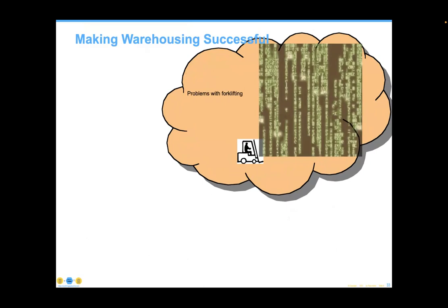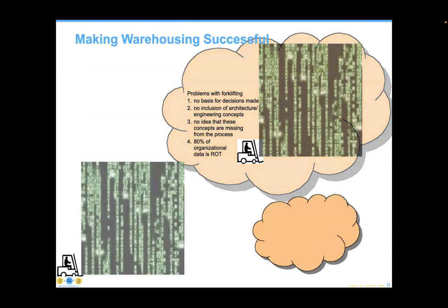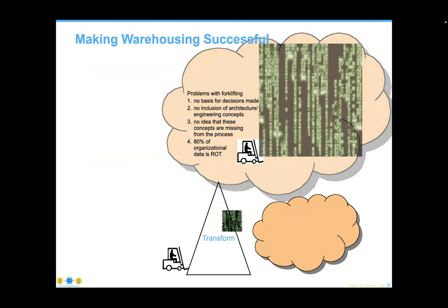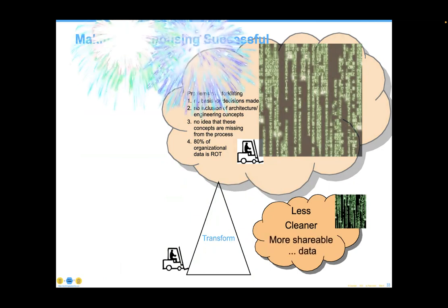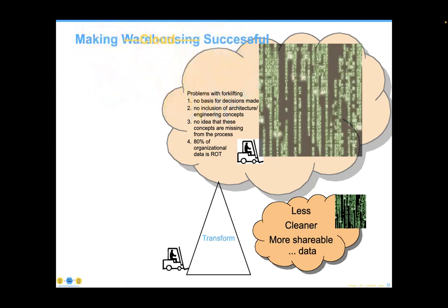The way it should be done is that forklifting brings data into an organizational context where we shrink it, improve it, make it cleaner in volume, and more shareable — and this is true whether you're warehousing or clouding. This brings on an opportunity for what we call data branding. You can say the data in this warehouse or cloud-based warehouse is cleaner, there's less of it to wade through, and it's an easier data set to work with. Of course, if you just forklift your data into the cloud without this process, you're making things more difficult.